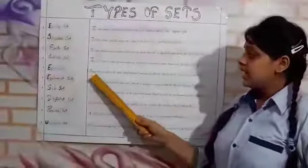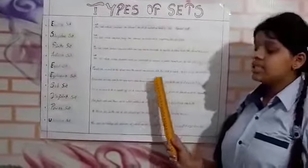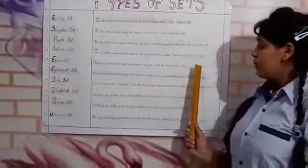Equal Set: sets are said to be equal when the elements are same in both sets A and B. For example, A = {1, 2} and B = {2, 1}.